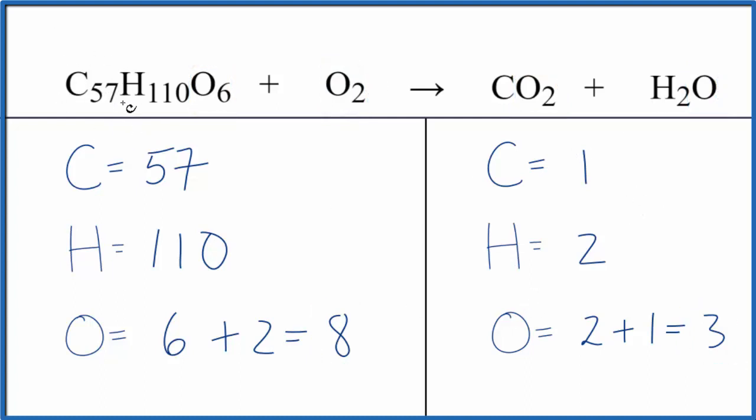Often when I see something like 57, my inclination is to get that to be an even number, and that worked out pretty well. So I'm going to put a two here. So now I need to update these numbers. That'll look like this.